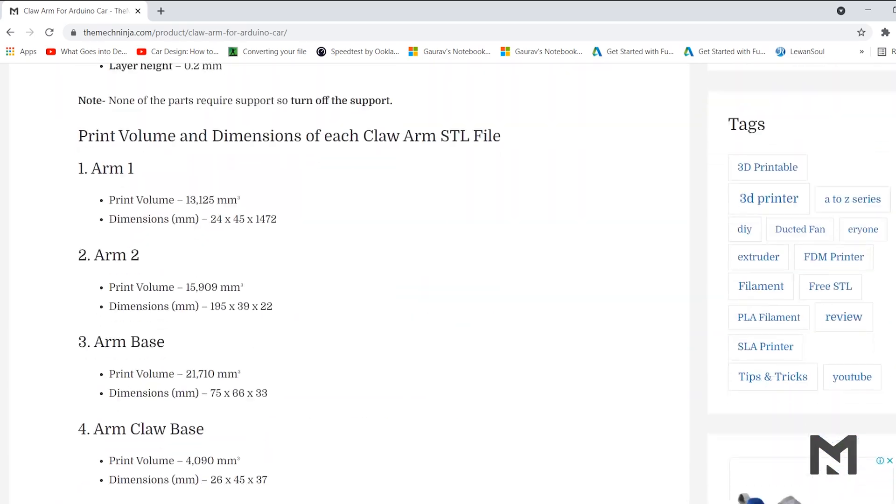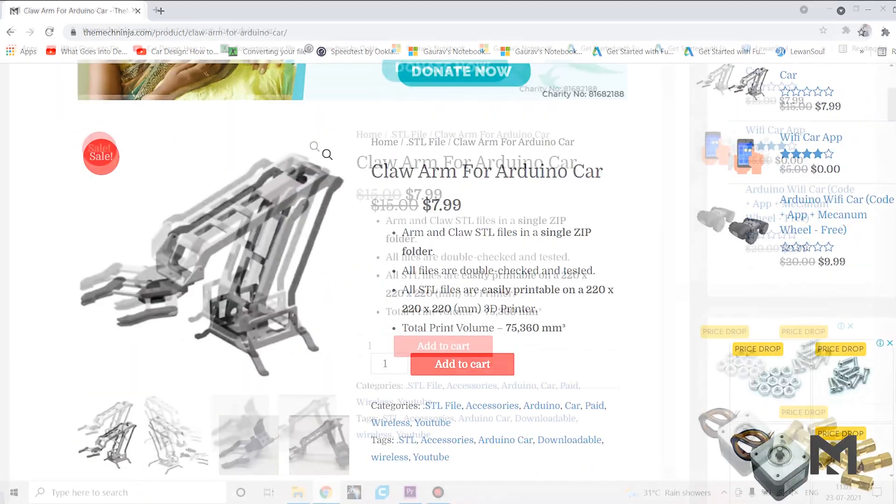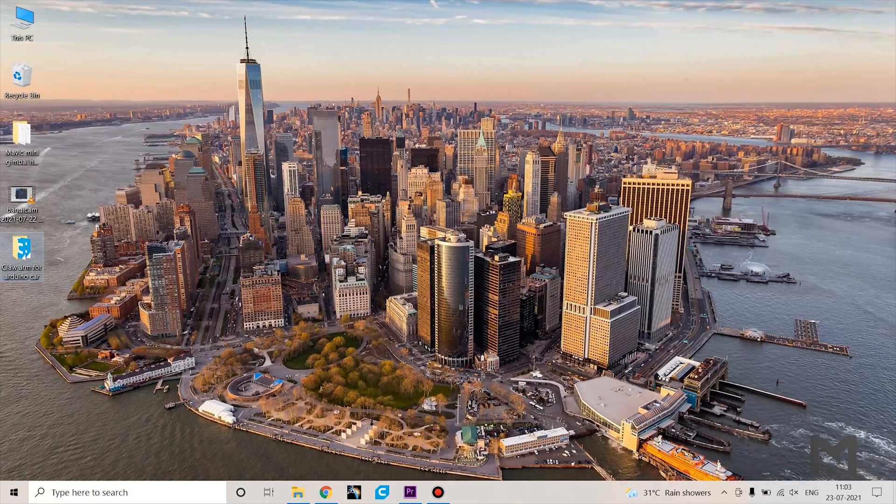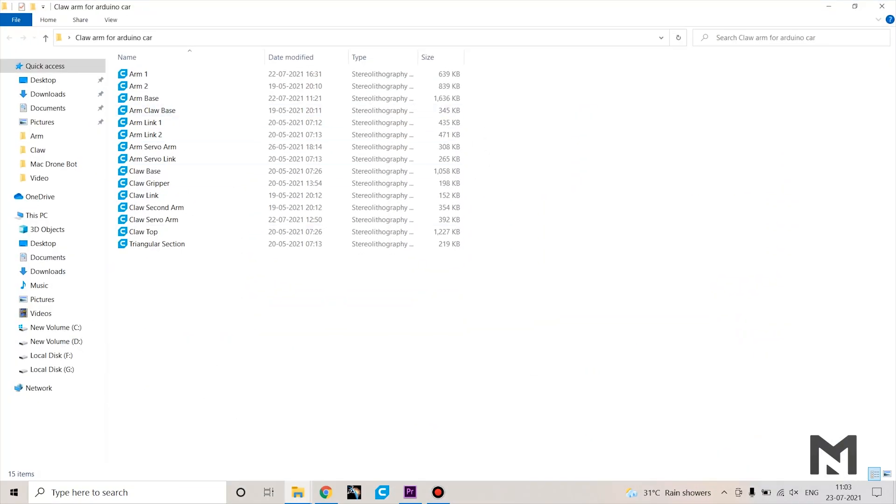You can choose from a variety of projects, and on clicking on the project you will receive all the information about the files and the printer settings. Once you download it, you will receive all the printable files required to make the robot.